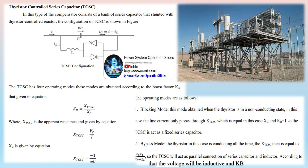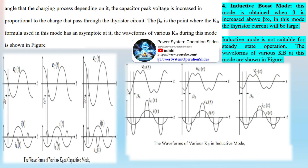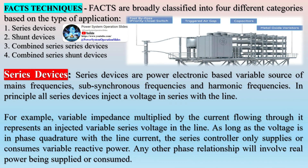FACTS techniques are broadly classified into four different categories based on the type of application: 1. Series devices, 2. Shunt devices, 3. Combined series-series devices, 4. Combined series-shunt devices. Series devices are power electronics-based variable sources of main frequencies, subsynchronous frequencies, and harmonic frequencies. In principle, all series devices inject a voltage in series with the line. As long as the injected voltage is in phase quadrature with the line current, the series controller only supplies or consumes variable reactive power; any other phase relationship will involve real power being supplied or consumed.